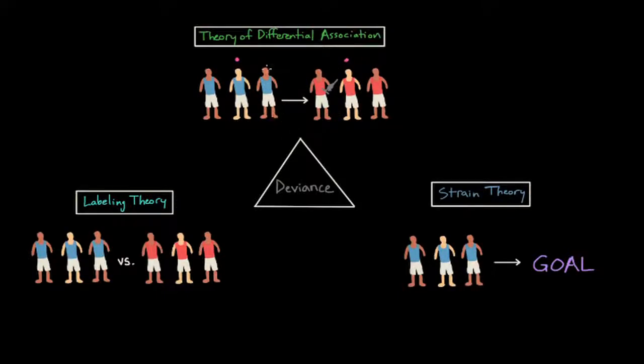However, if they form relationships with someone who follows norms, they are less likely to learn deviant behavior.